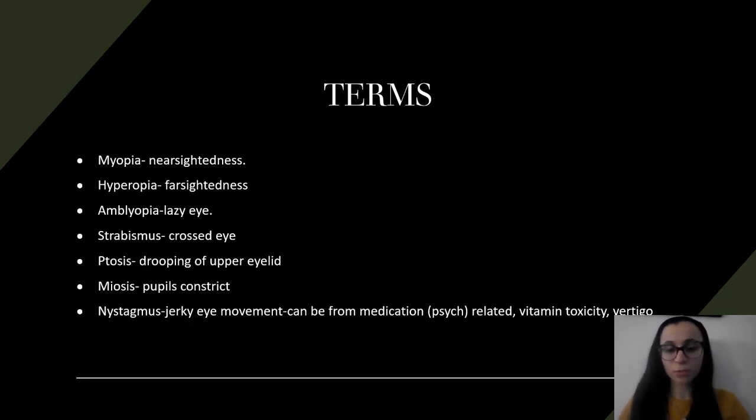Ptosis is when the upper eyelid droops. Miosis is pupils constrict, and nystagmus is jerky eye movement, which usually from medication, a lot of psych related, vitamin toxicity, vertigo, etc.